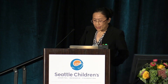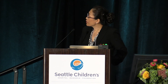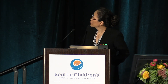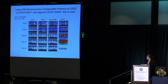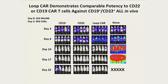We then tested the loop CAR in vivo using the same NALM6 xenograft model. At a relatively low dose of CAR T cells, the loop CAR demonstrated comparative potency to both the single CD19 CAR and single CD22 CAR.